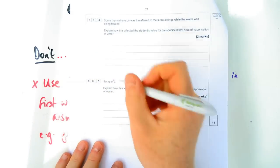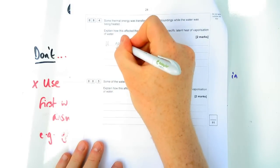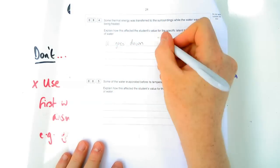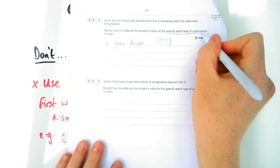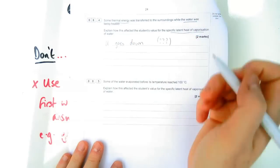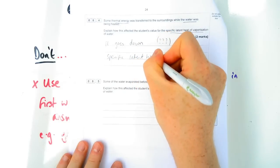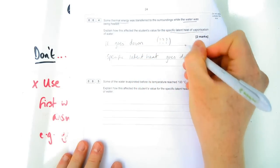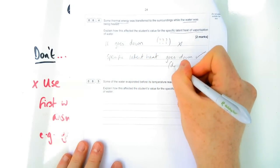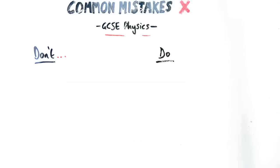So let me give you an example here. So this is about the specific heat capacity equation. It says some thermal energy is transferred to the surroundings while the water was heated. Explain how it's affected the student's value for specific latent heat. Now, if you say the word it here, you could be referring to the latent heat, you could be referring to thermal energy, you could be referring to the water. But if you want to get the mark here, the question is asked about specific latent heat, you mentioned specific latent heat.